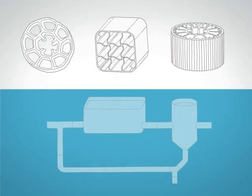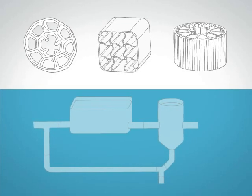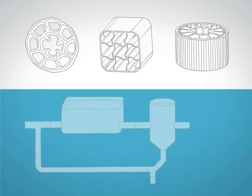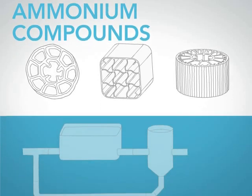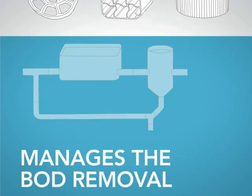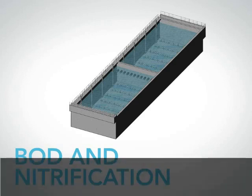IFAS combines the best of two processes: activated sludge and fixed film. The fixed film process oxidizes ammonium compounds, while the activated sludge process manages the BOD removal. Alternatively, the reactors can be configured to have BOD removal and nitrification in both fixed film and the suspended growth phases.